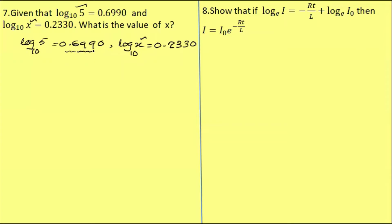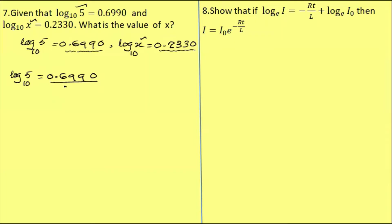Log 0.6990. That gives us 0.233. Log 5 base 10 equal to 0.6990. X is equal to 0.6990 divided by 3, that is equal to 0.2330.